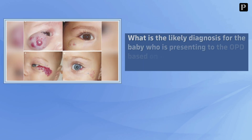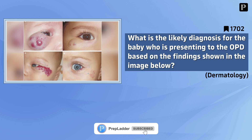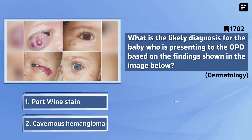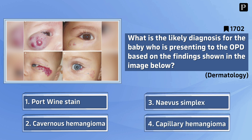Question 7: What is the likely diagnosis for the baby presenting to the OPD based on the findings shown in the image below? Your options are: port wine stain, cavernous hemangioma, nevus simplex, capillary hemangioma. And the correct answer is capillary hemangioma.